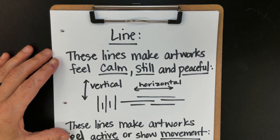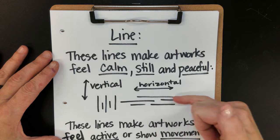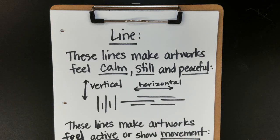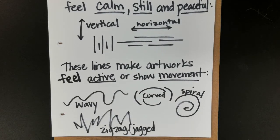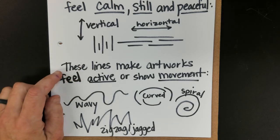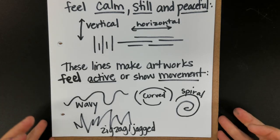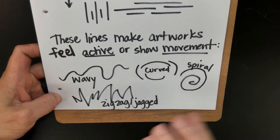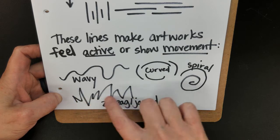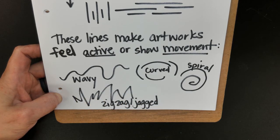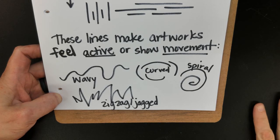If you see a lot of objects or items in artworks that are vertical or across the scene, that tends to make landscapes or any sort of image feel more calm or peaceful. Whereas if you see artwork filled with lines that are wavy or curved or spiral, things that look jagged or zigzag — that will show motion or movement in your art or the art that you're looking at.